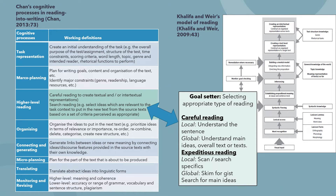I used two frameworks to analyse the data. The first was Chan's cognitive processes in reading into writing. I integrated Chan's high-level reading — highlighted in a slightly different colour — which mentions different types of reading taken from Khalifa and Weir's model of reading. Khalifa and Weir subdivided reading into careful reading — proceeding sequentially through the text to build a full understanding — and expeditious reading, which includes things like scanning, searching, and skimming.